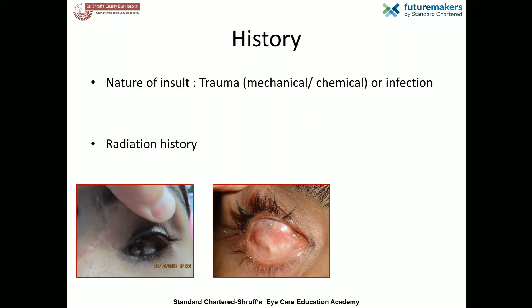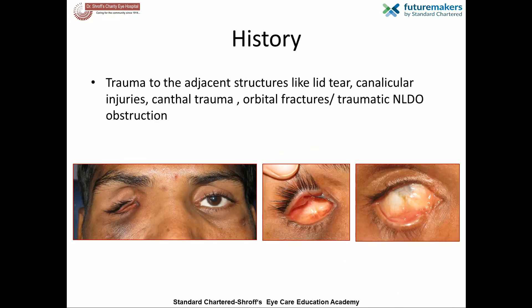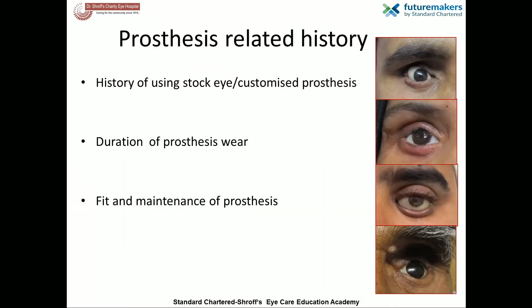Radiation received early in life following eye removal can lead to arrested bony growth. History of associated adnexal or adjacent periocular trauma like lid tear, canalicular injury, canthal injuries, orbital fractures, or traumatic nasolacrimal obstruction should also be elicited. History regarding the duration of wearing a prosthesis or stock eye — which is a ready-made prosthesis — and the quality of the fit of the prosthesis also gives a clue regarding the socket status.